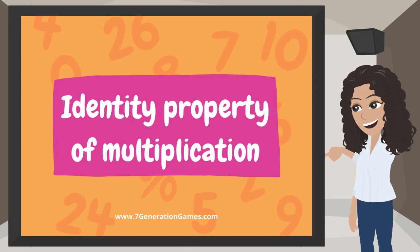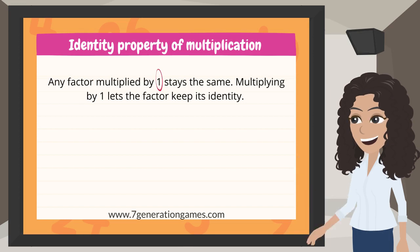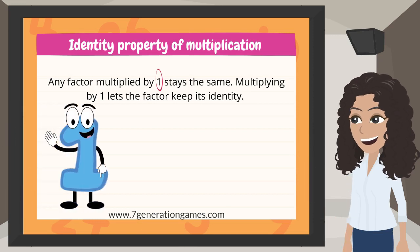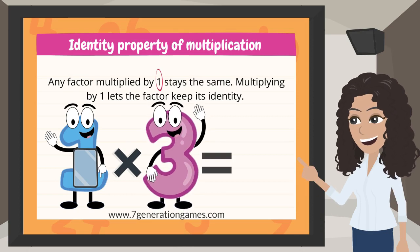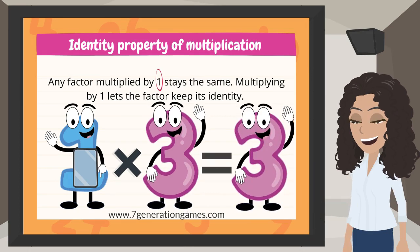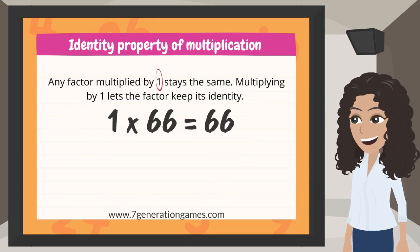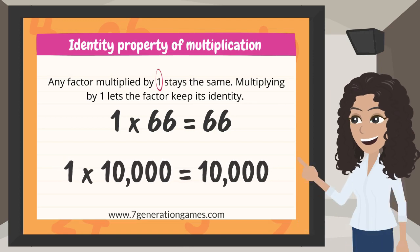Identity Property of Multiplication: any factor multiplied by 1 stays the same. Multiplying by 1 lets the factor keep its identity. Think of the number 1 as a mirror — any factor multiplied by 1 sees itself as the product or result. For example, 1 times 3 equals 3, 1 times 66 equals 66, and 1 times 10,000 equals 10,000.